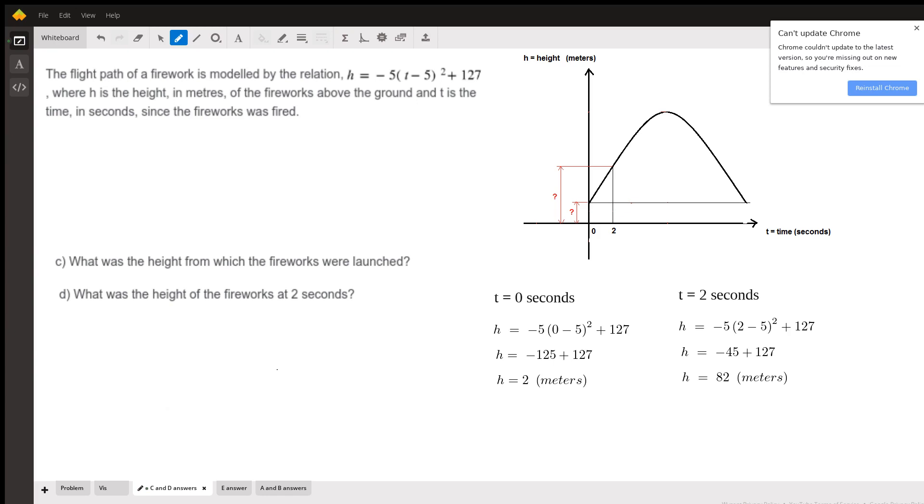Question C asks, what was the height from which the fireworks were launched? You need to ask yourself, what does it mean that fireworks were launched? How do I convert this into math? Well, when the fireworks were launched, it means time starts counting. And by the way, this graph over here shows us how the height changed over time. So, at the very initial moment, when the fireworks were launched, the time was zero. As soon as we figured it out, we can substitute T as zero in our equation relation, and we will immediately have our answer right away, two meters.